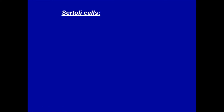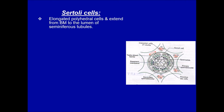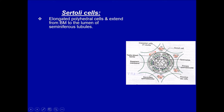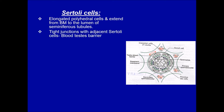The supporting cells — Sertoli cells — are large, elongated, polyhedral cells extending from the basement membrane to the lumen of the seminiferous tubule. They bind tightly with each other, forming tight junctions. This is very important because outside the basement membrane are blood vessels; the tight junctions of Sertoli cells form the blood-testis barrier, preventing blood cells from entering the tubule and contacting the maturing cells.